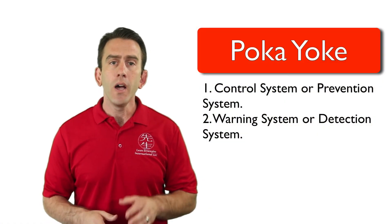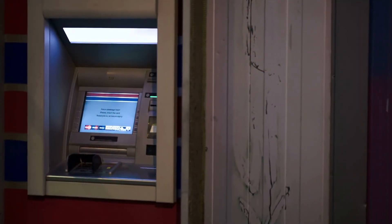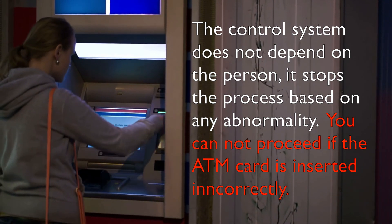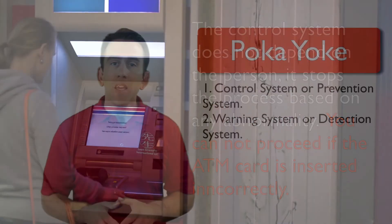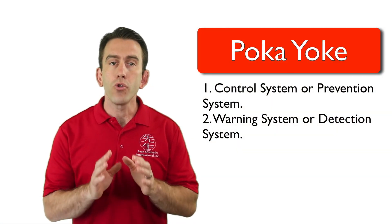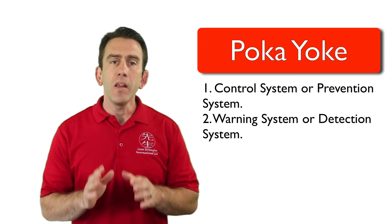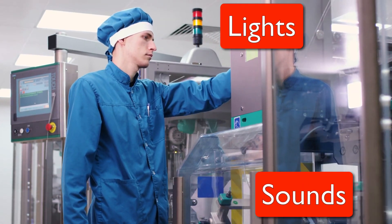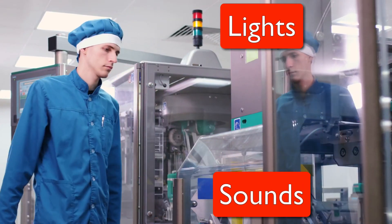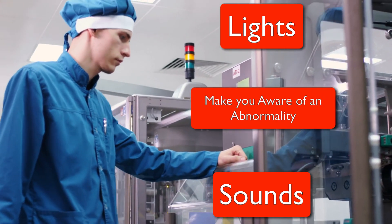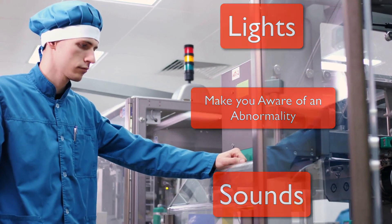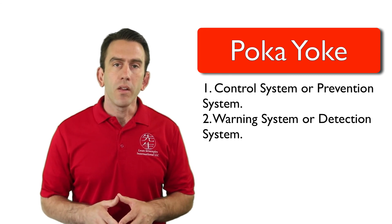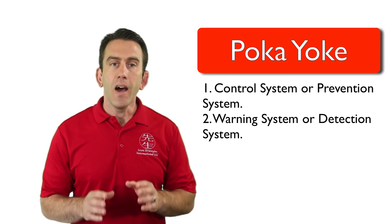Wherever possible, a control system should be used, because the control system does not depend on a person — it stops the process based on any abnormality. If you cannot use a control method, you should use a warning system. There are many different types of systems for both control and warning. Some use lights, others have sounds, and many use other forms of sensory notification. Both types will make people aware of an abnormality, but only one type will stop or control the process automatically. The key difference between the two is that one is automated and the other is not.